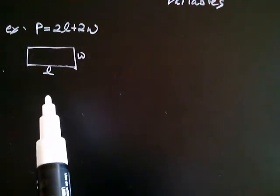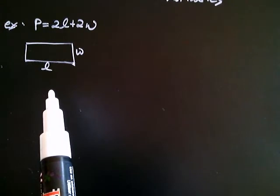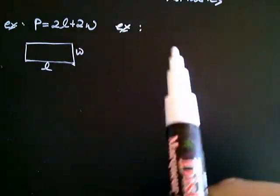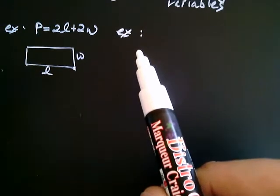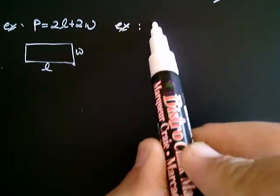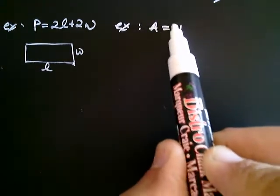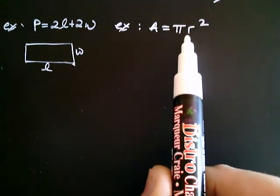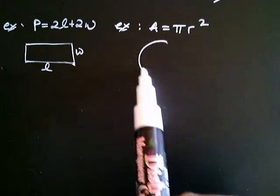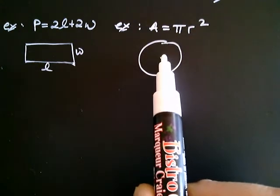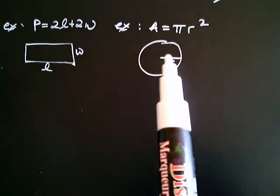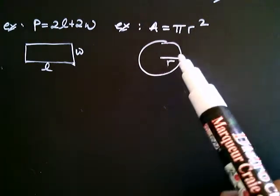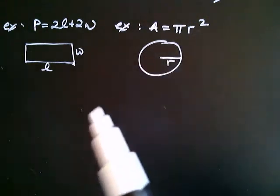Another example of a formula would be the formula for the area of a circle. And that would be this: the area would be equal to pi times R squared. Now R is the radius of the circle. So if you had a circle and this was the radius R, this formula would give you the overall area of the entire circle.